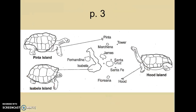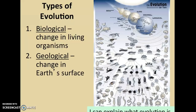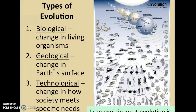Now we're going to look at the different types of evolution. Biological evolution is change in living organisms. Geological evolution is change in Earth's surface — 'geo' being the stem for earth. Technological evolution is how society changes and develops things to meet specific needs. For example, telephones like iPhones have not always been like they are now. You used to have big rotary dial phones with a circular dial you had to turn all the way around just to dial one number. Prior to that, telephone numbers were a lot shorter and you didn't have to put in an area code. Technology has changed in a lot of different ways.